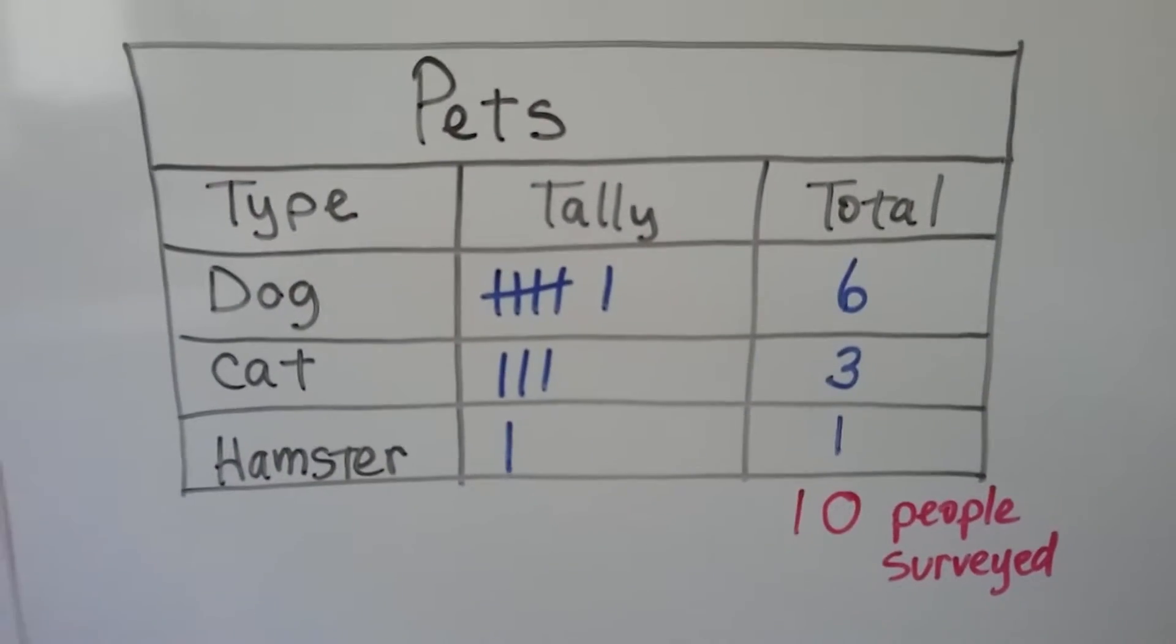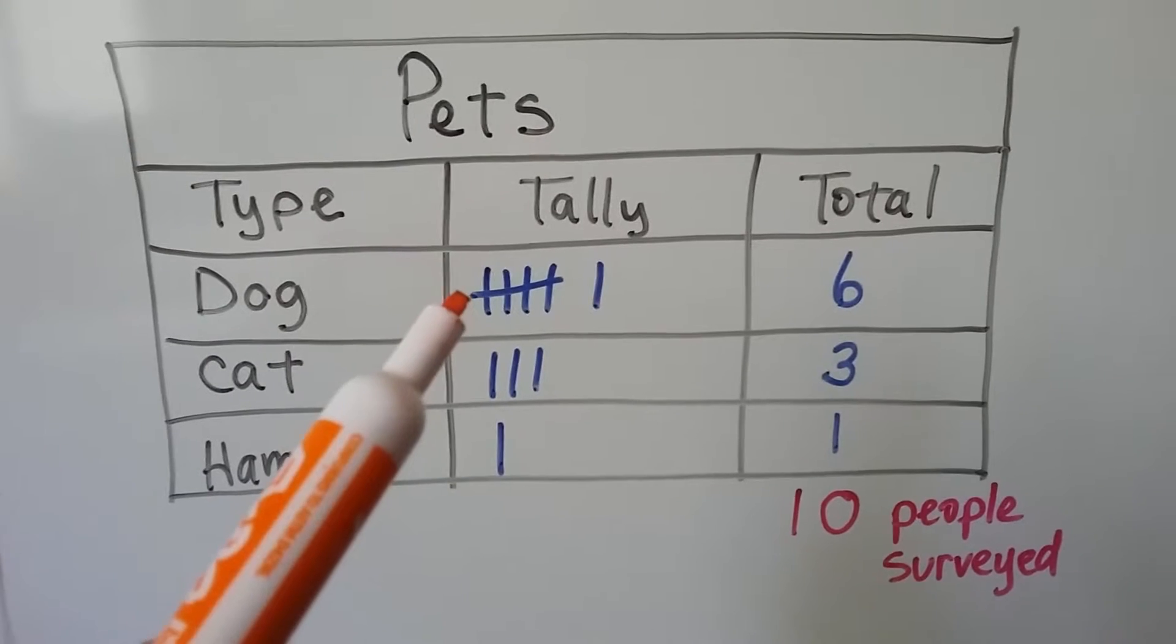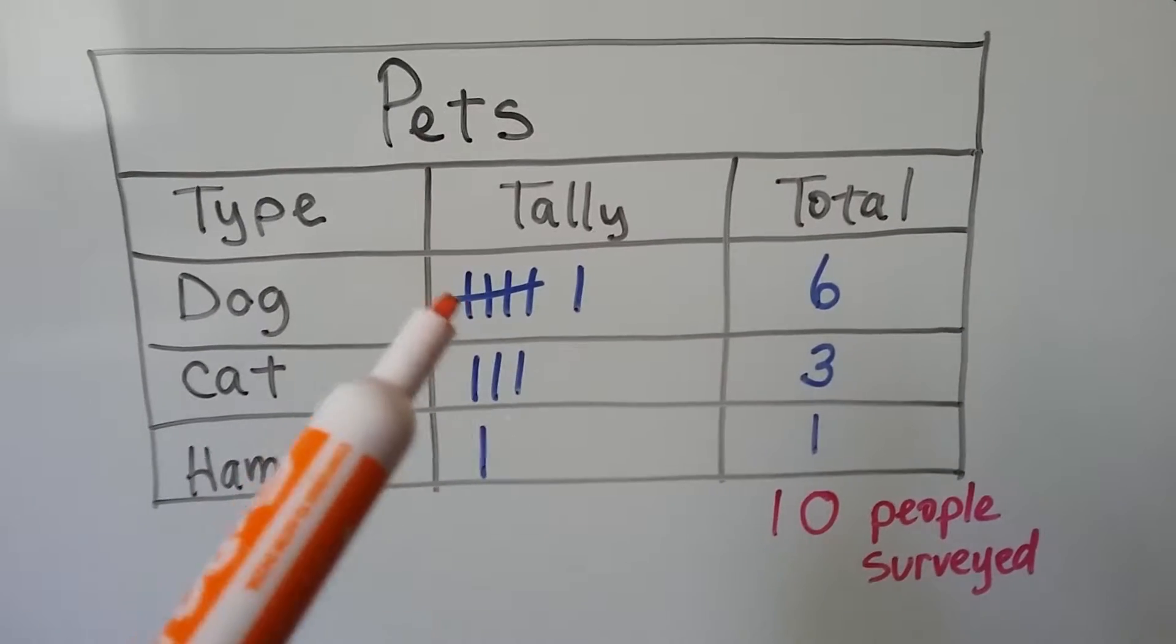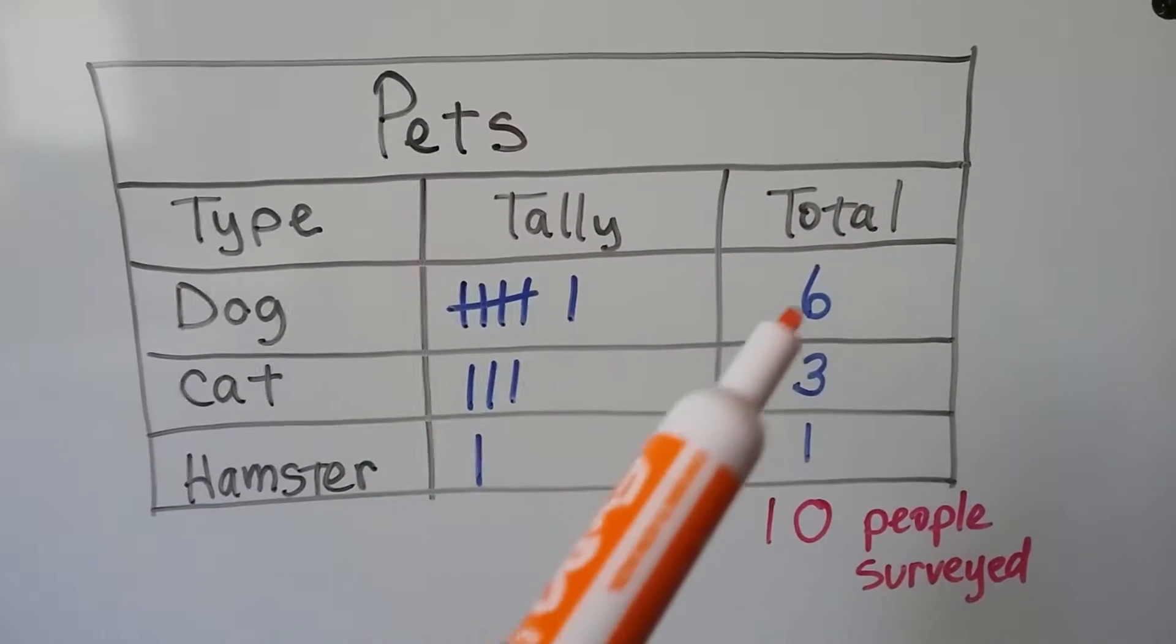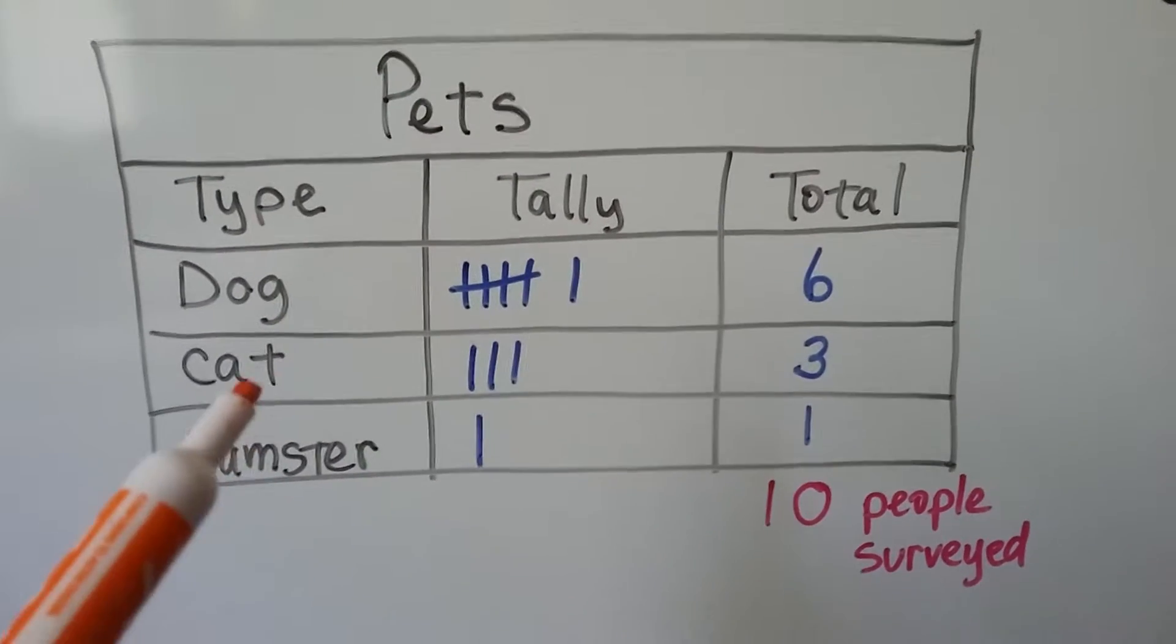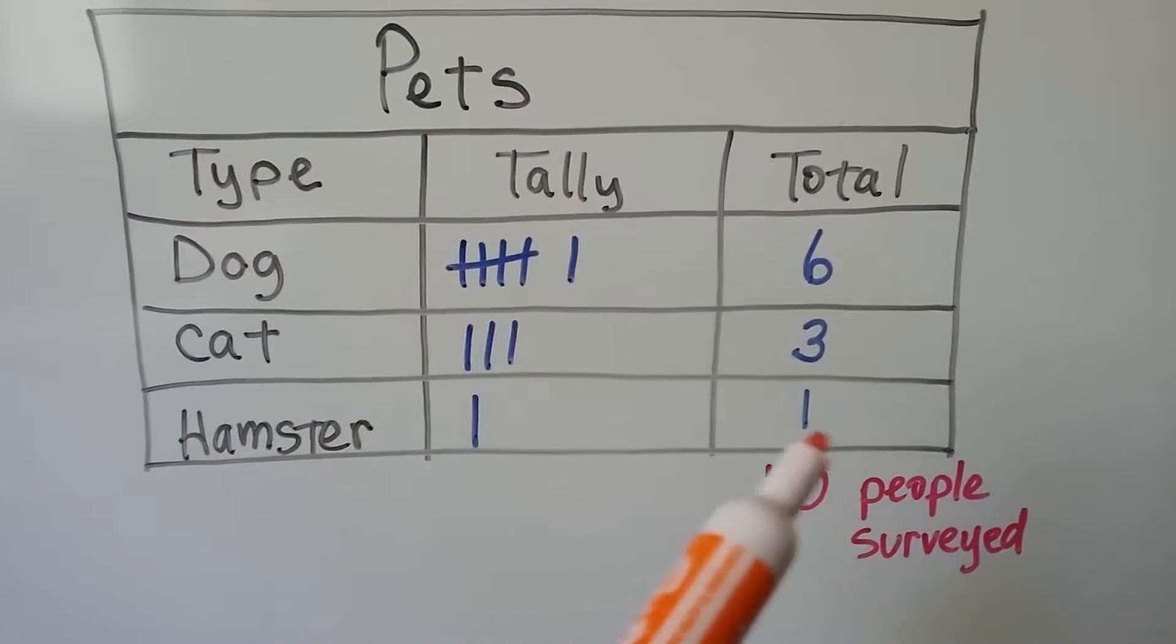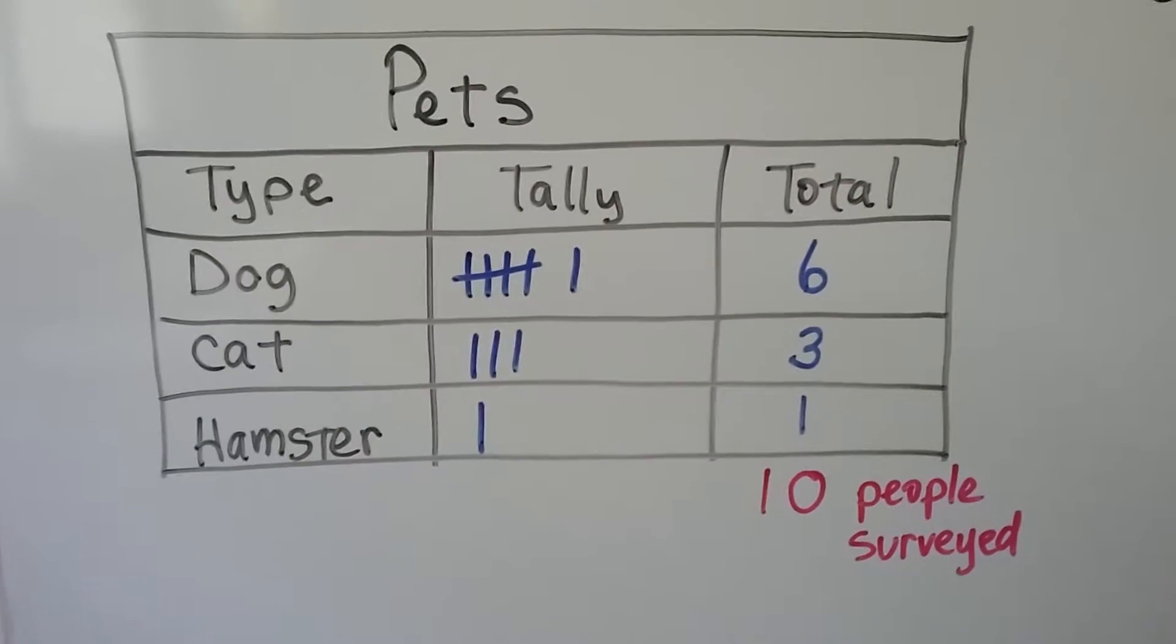If we asked about pets, and we asked ten people, and let's say six people said they like dogs. We would make our four tally marks and cross it for the fifth one. And here's one by itself for six. That's a total of six. Let's pretend that three liked cats and one liked hamsters. Six plus three plus one is ten people surveyed.